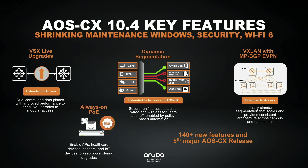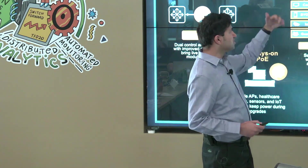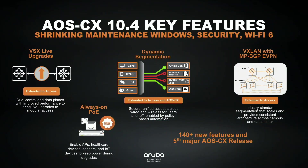These switches use our own custom Gen 7 ASIC. We also have customers who want standards-based VXLAN, MPBGP, EVPN-based segmentation — a scalable, standards-based solution across campus and data center. We have invested in this as well, and we have VXLAN, MPBGP, EVPN on our 6000 series as well as all our 8000 series — end-to-end, all of them.